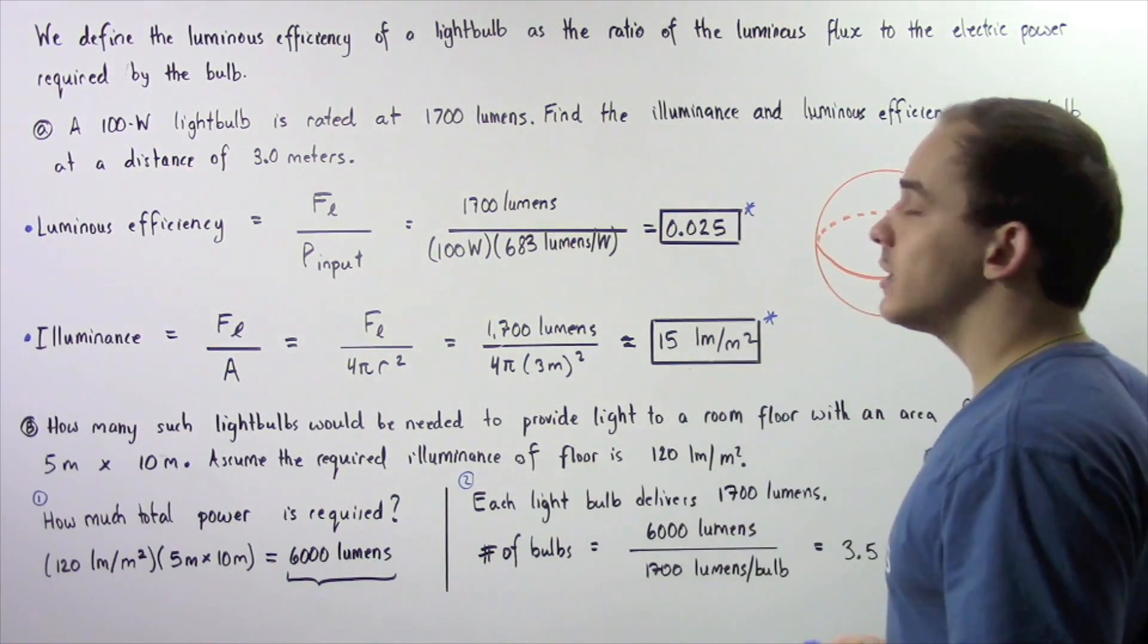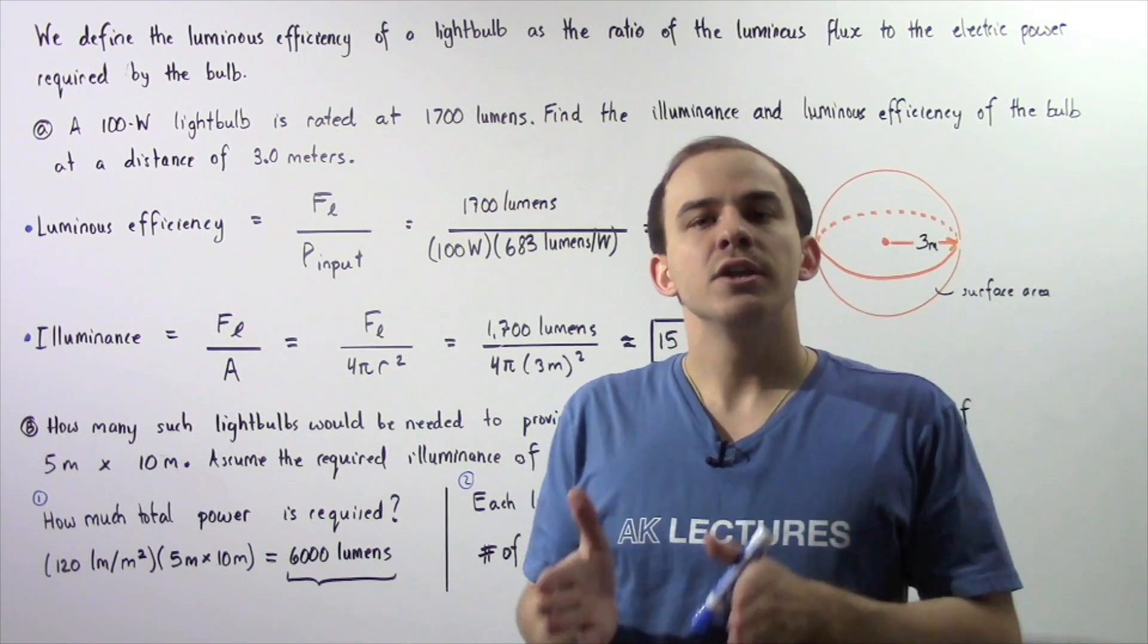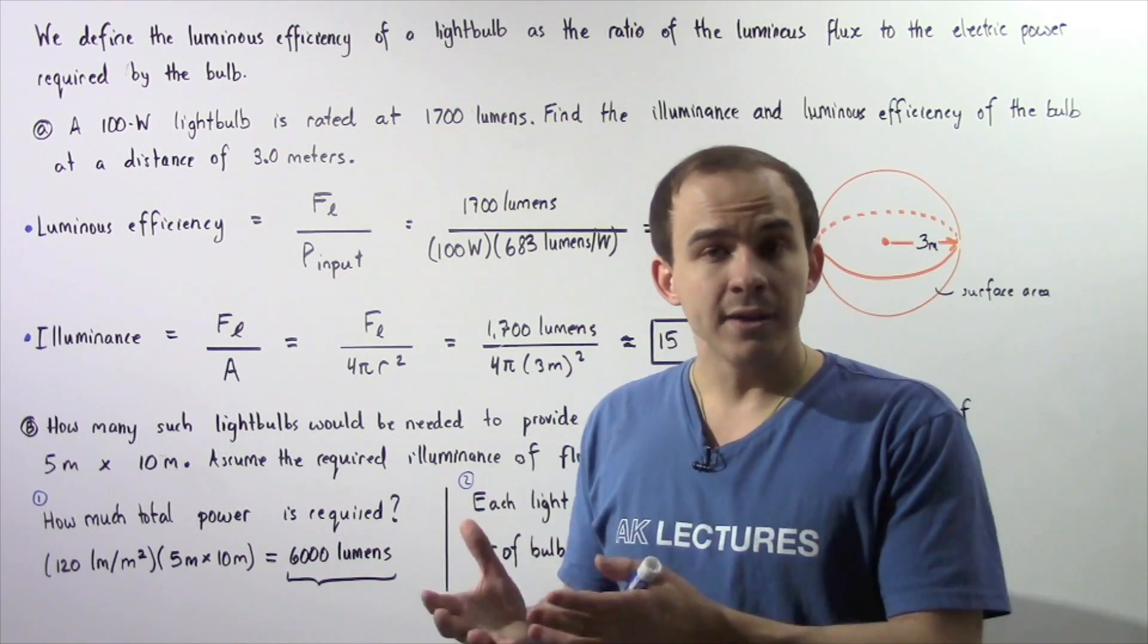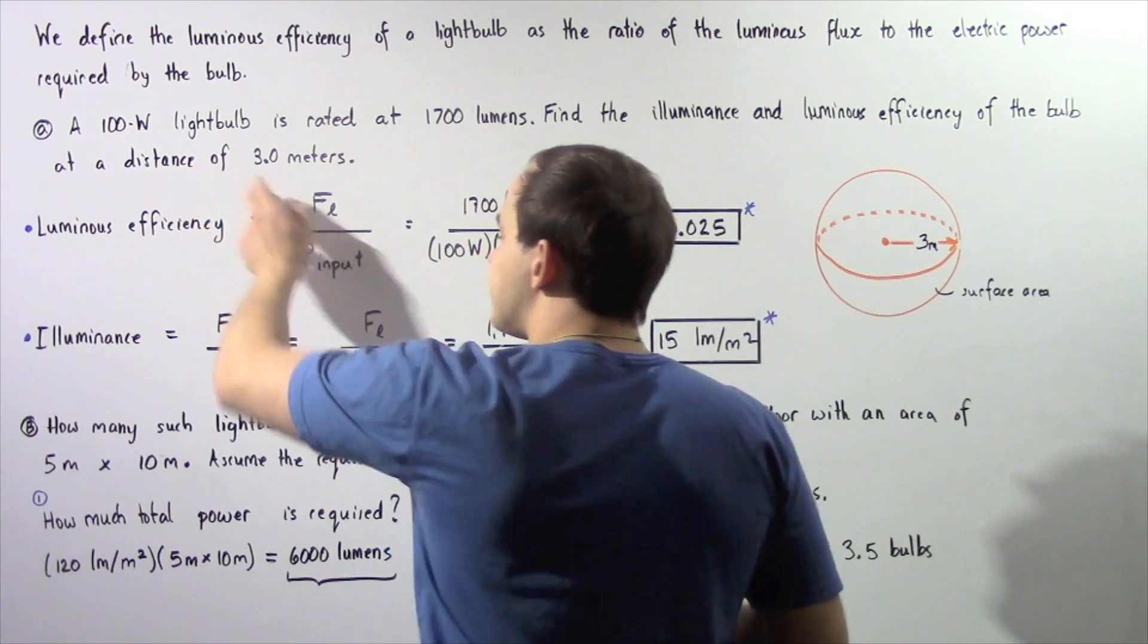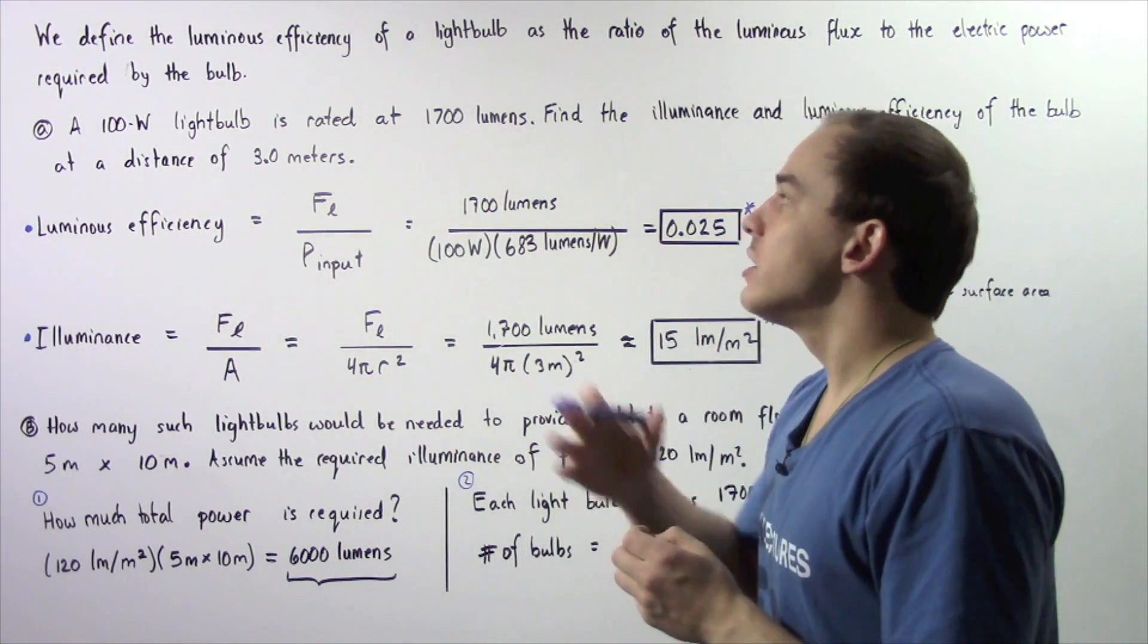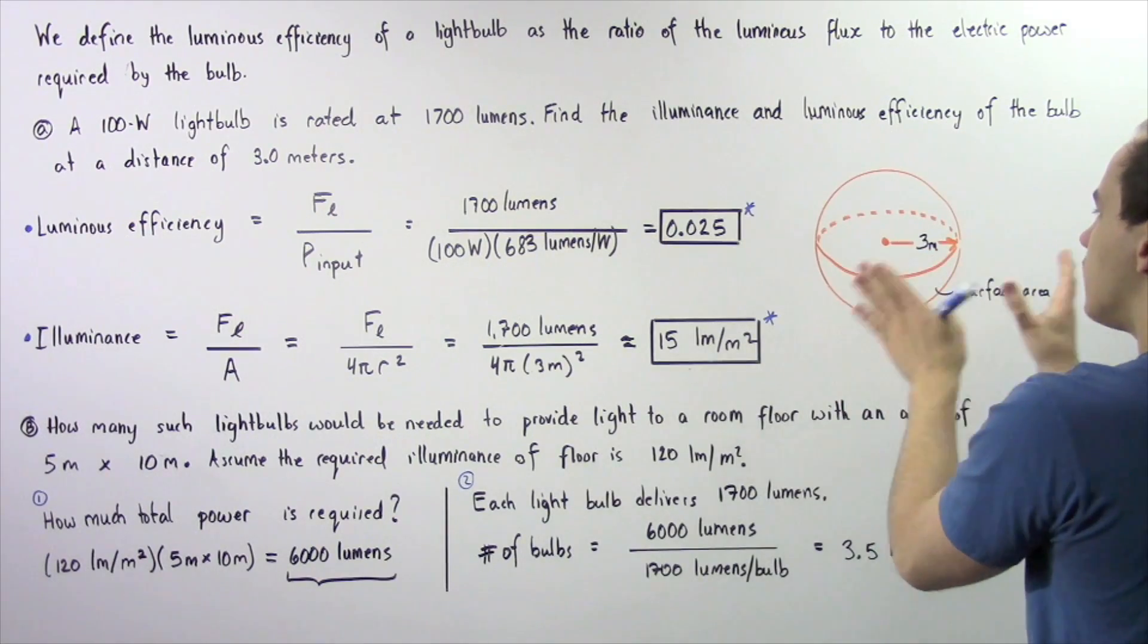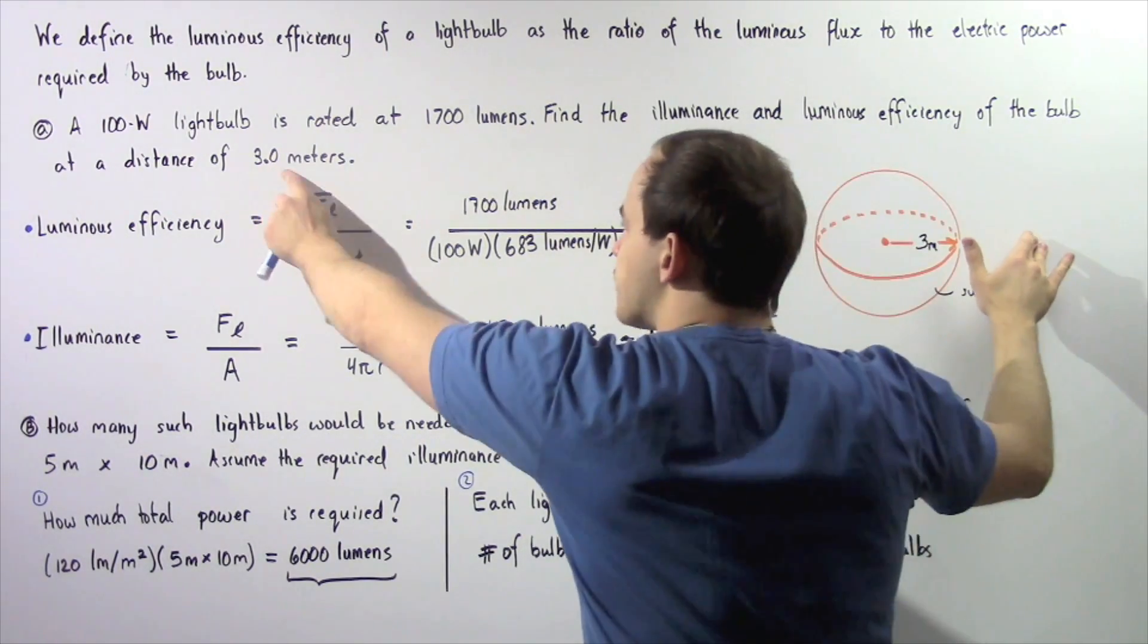Now we want to find the illuminance. Illuminance of our light is simply the luminous flux, the power delivered by our light per area, the area that that light falls on. We know that the distance from the point of origin of the light is 3 meters.